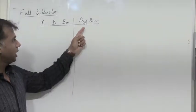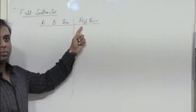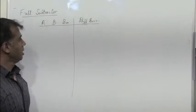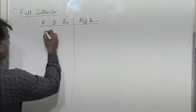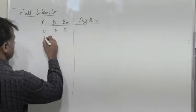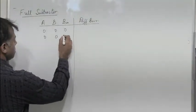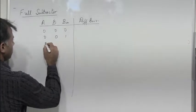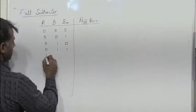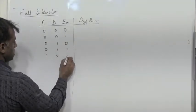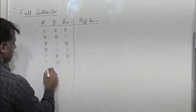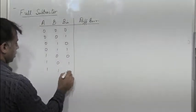Since there are three inputs, you have combinations: 0,0,0 — 0,1,0 — 0,1,1 — 1,0,1 — 1,0,1 — 1,1,0 — 1,1,1. So eight total input combinations for the truth table.